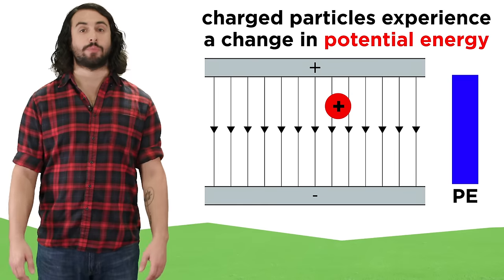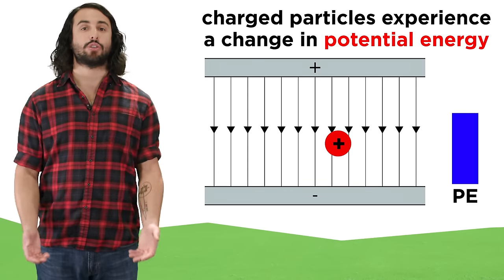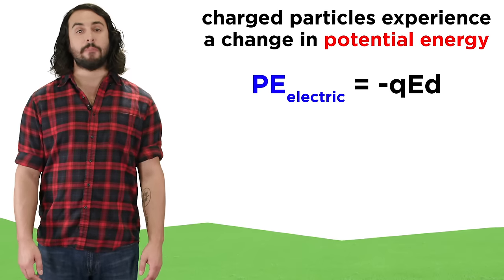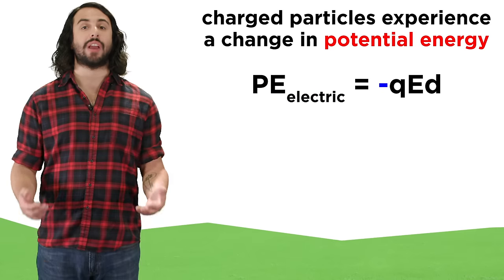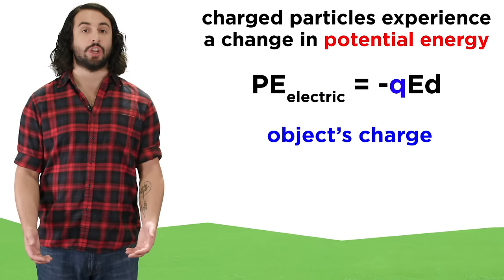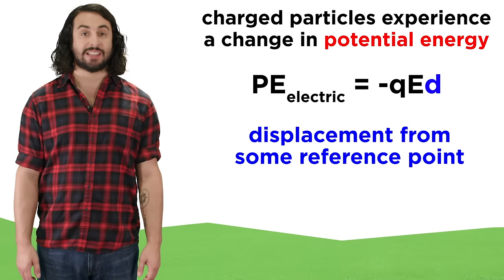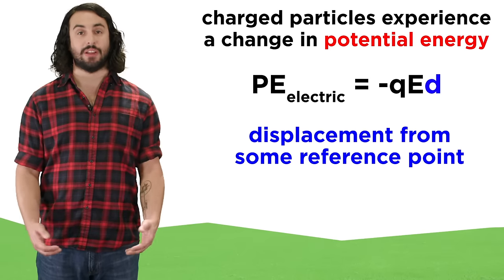As charged particles move within an electric field, their electrical potential energy changes. For a uniform field, the magnitude of this change is equal to the opposite of the object's charge, times the electric field strength, times its displacement from the reference point in the direction of the field.